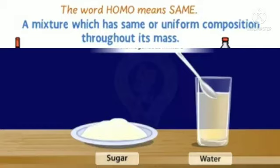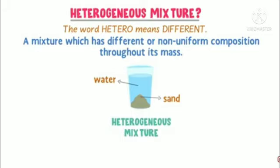Homogeneous mixture. 'Homo' means same. A mixture which has a uniform composition throughout is called a homogeneous mixture. For example, sugar in water and salt in water. When sugar is added into water, it gets dissolved. This solution is a homogeneous mixture.